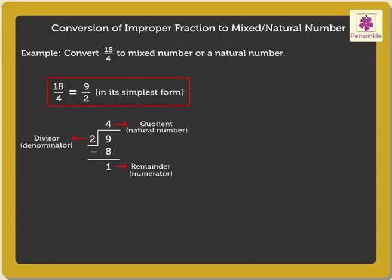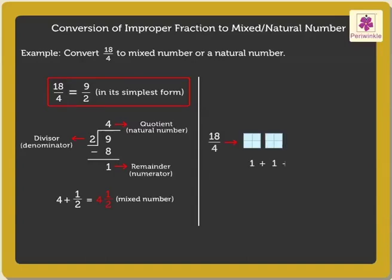Look. We got 4 plus 1 upon 2, which is equal to 4 and a half. Thus, 18 upon 4 is equal to 4 and a half.